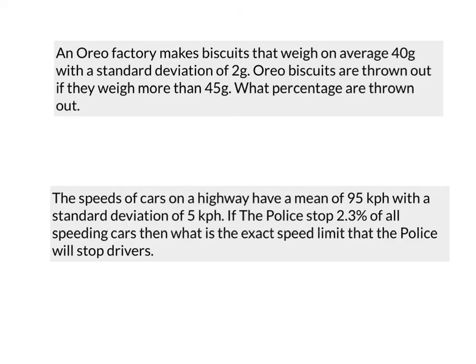So another good question. An Oreo factory makes biscuits that weigh on average 40 grams with a standard deviation of 2 grams. Oreo biscuits are thrown out if they weigh more than 45 grams. Some nice cookies getting thrown away there. What percentage are thrown out? So again, we're back to our same formula. Z equals the data point minus the mean over the standard deviation. So the data point is 45, minus 40, over the standard deviation of 2.